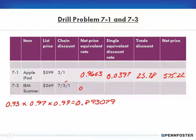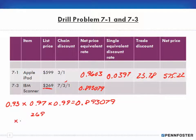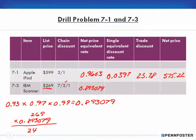So 0.893079 is our net price equivalent rate. To get the net price, we take the list price of $269 and multiply it by 0.893079. I'm not doing this math by hand — punch it into the calculator.